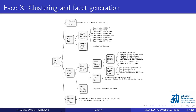Now let's have a look at an example result from one of our case studies to see what the result of FacetX looks like. As I said, FacetX uses hierarchical clustering, so we get a dendrogram as a result, which you can see in this image. We use this dendrogram to walk down the tree and extract the topics for each document cluster, as you can see in the nodes of this tree.